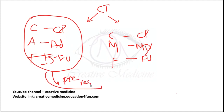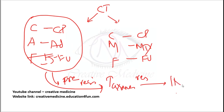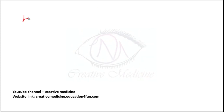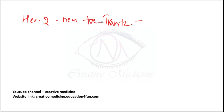If there is resistance to the CAF regimen, then you can use taxanes. If the patient is even taxane-resistant, then ixabepilone can be used. If the patient is HER2/neu positive, then trastuzumab is given. The second-line drug for HER2/neu positivity is lapatinib.